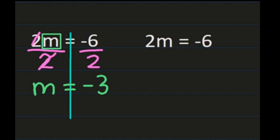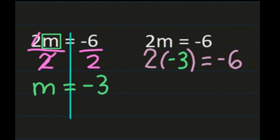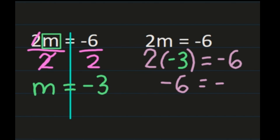We can check: m equals negative 3, so substitute negative 3 for m. We get 2 times negative 3, checking that it equals negative 6. Applying integer rules: a positive times a negative is a negative, and 2 times 3 is 6. We get negative 6 equals negative 6, so our answer of m equals negative 3 is correct.